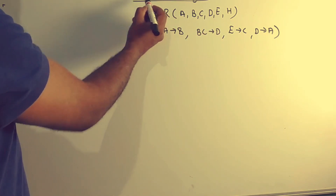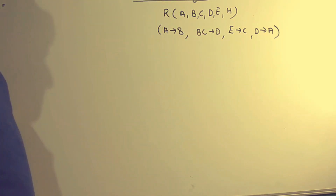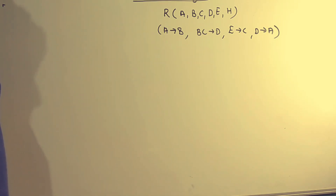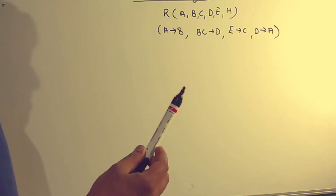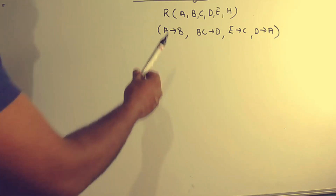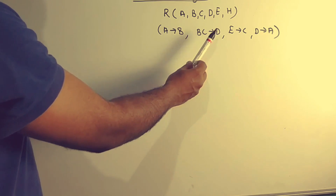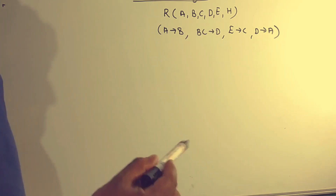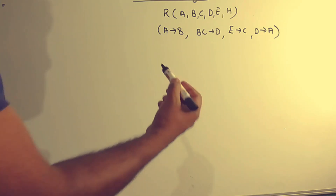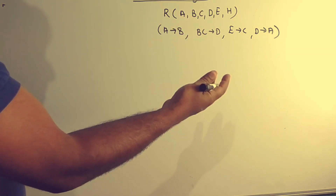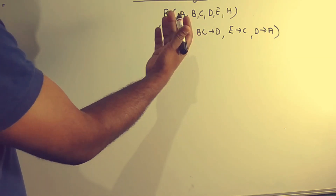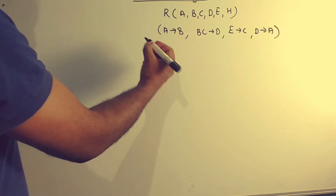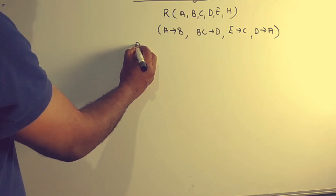In the previous video, we talked about a relationship with a function. Today we are going to talk about a super key, a candidate key, an alternate key, and a primary key. We will also do the closure property.